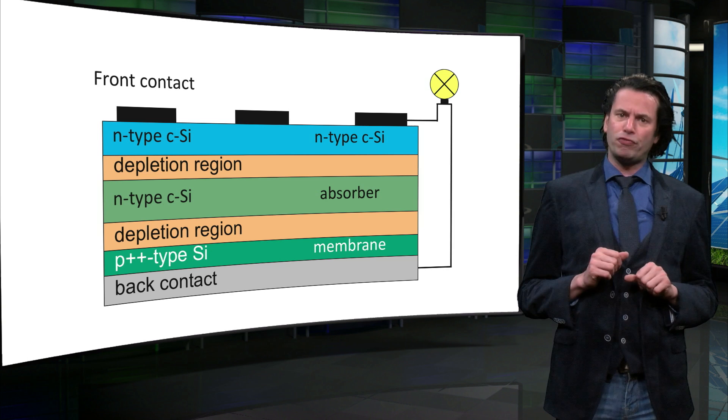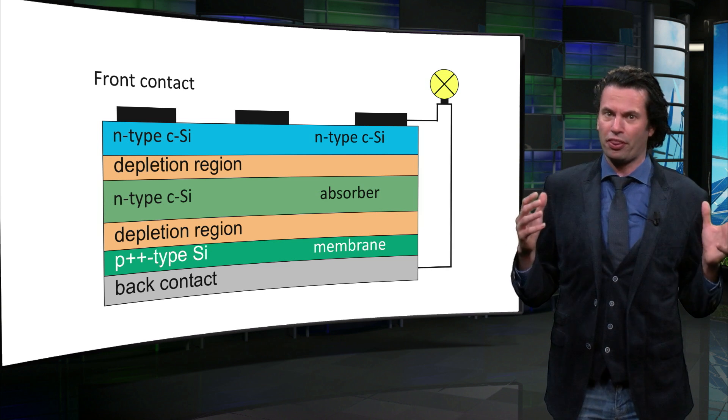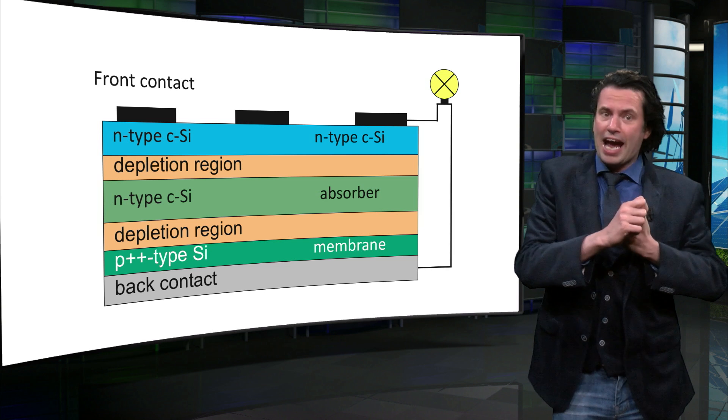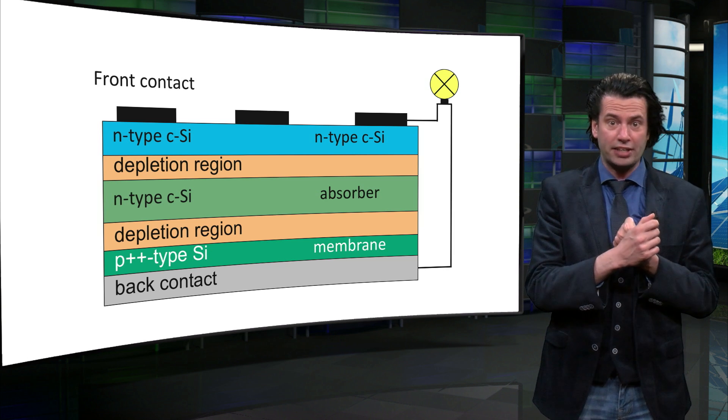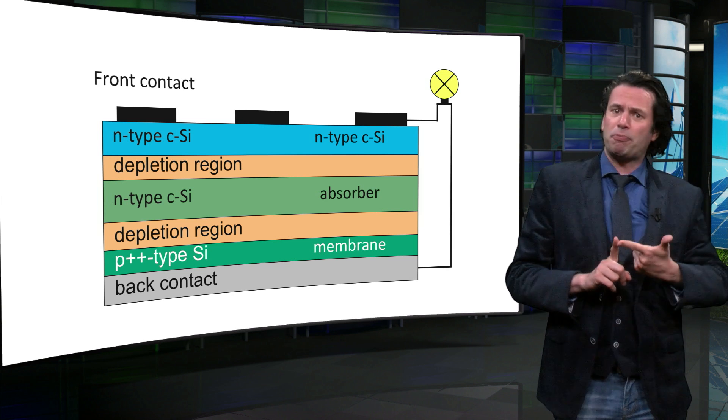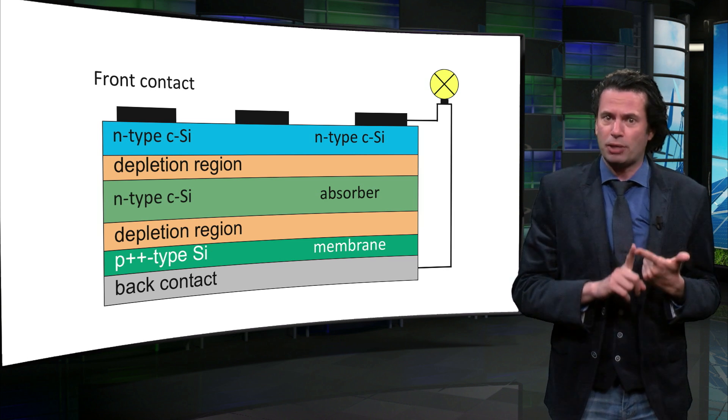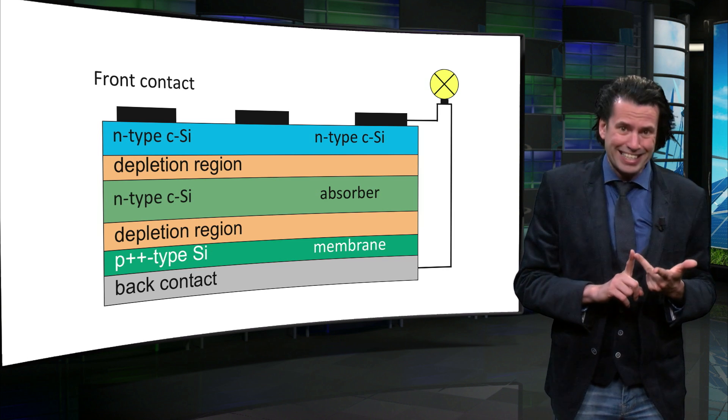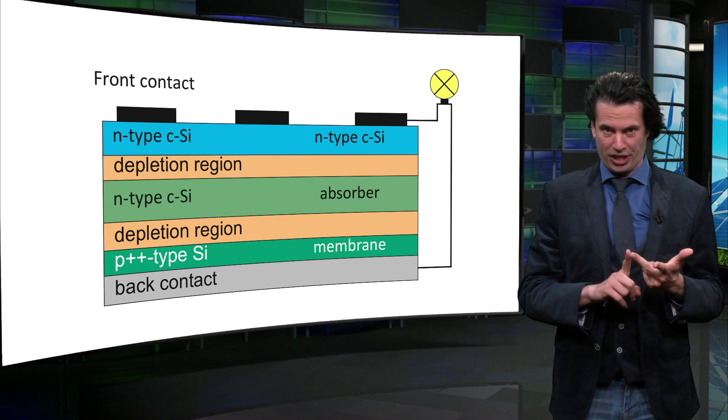You can see that the photovoltaic process is based on three important principles. First, excitation of free mobile charge carriers due to the light absorption. Second, the separation of the charge carriers and third, collection of the charge carriers at the contacts.